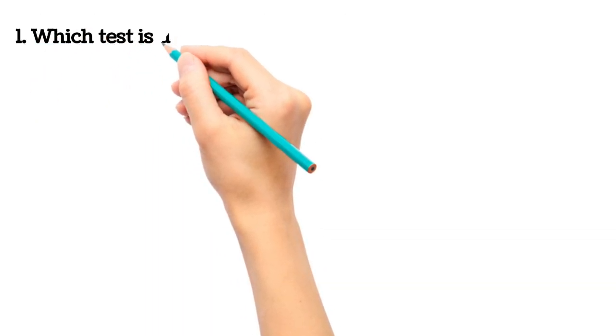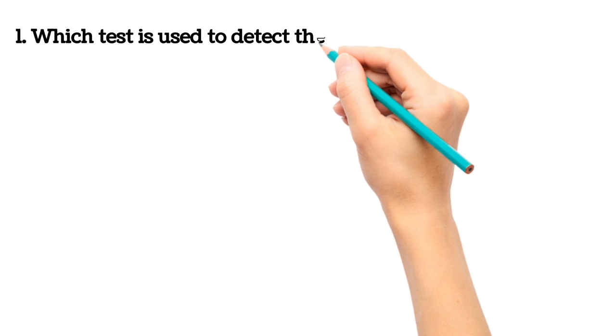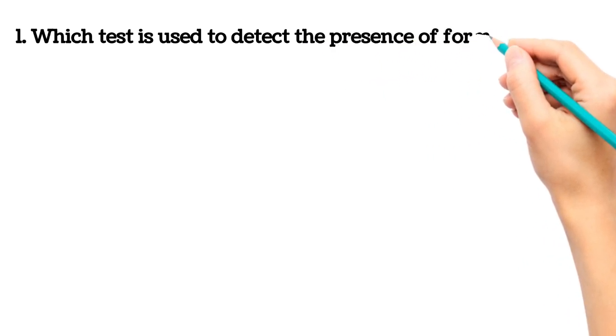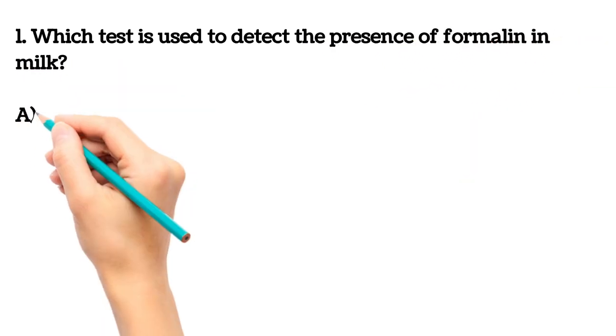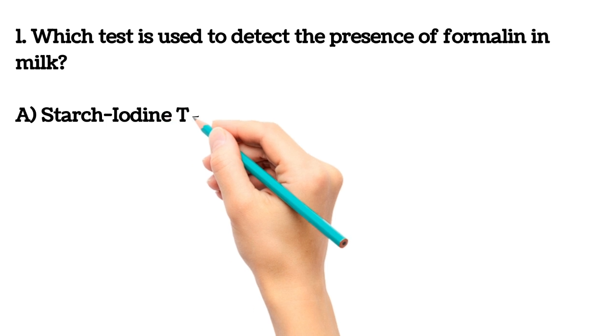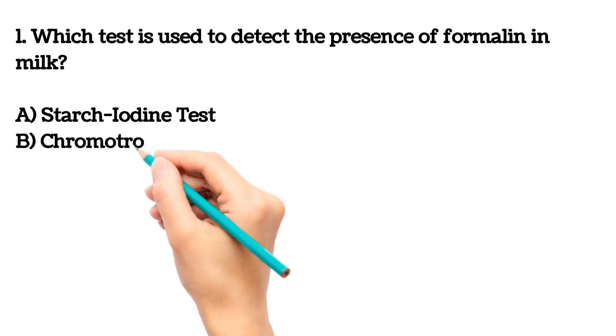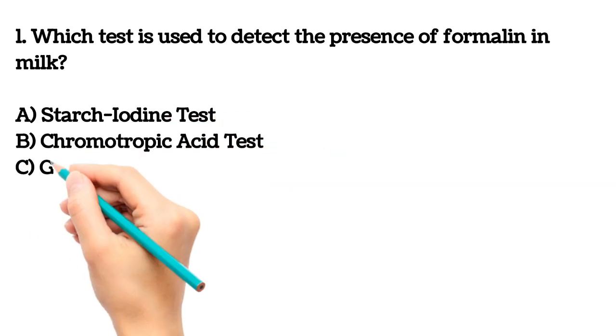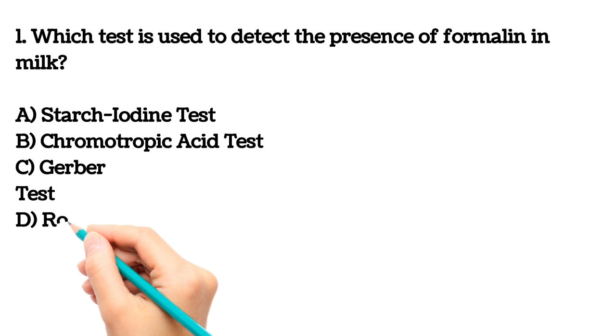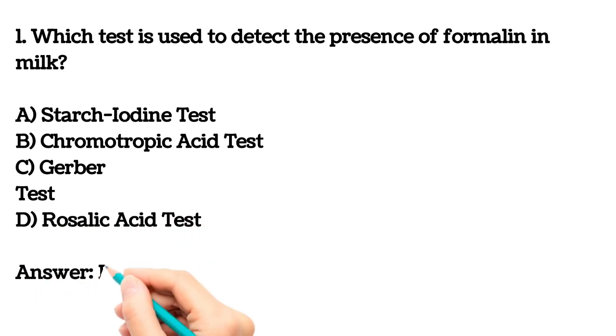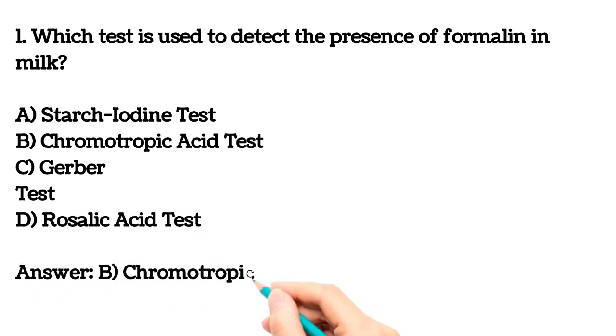Next question. Which test is used to detect presence of formalin in milk? A. Starch iodine test B. Chromotropic acid test C. Gerber test D. Rosalic acid test. Here answer is B, Chromotropic acid test.